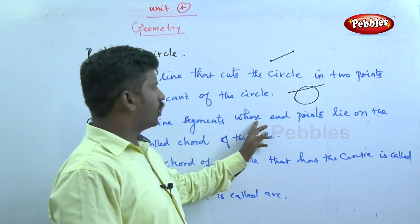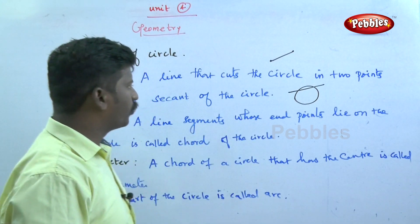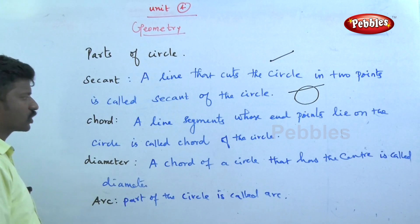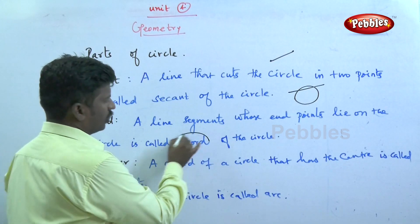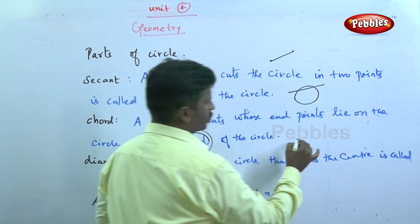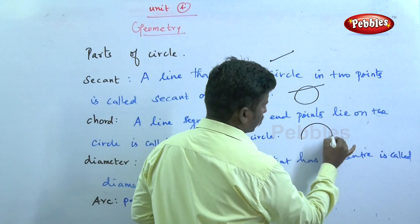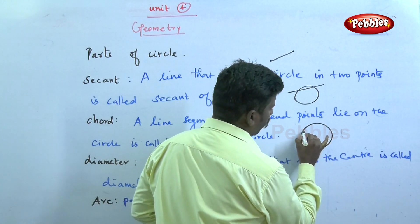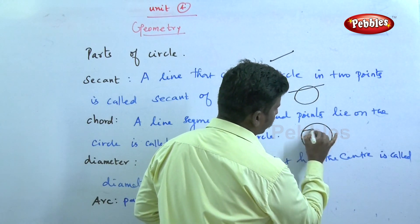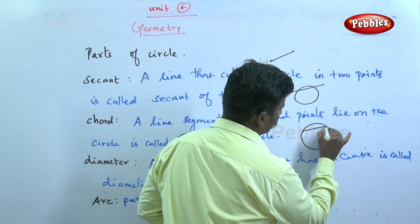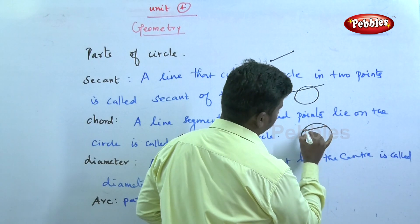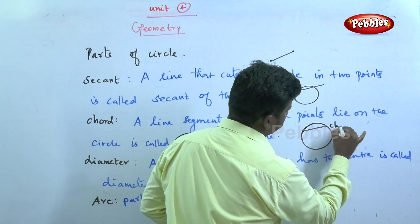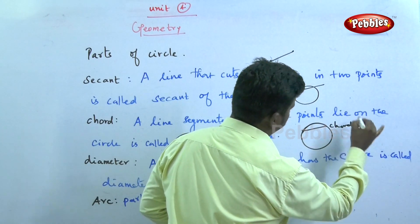The second one is chord — a line segment whose endpoints lie on the circle is called a chord of the circle. Take a circle; these are the endpoints on the circle. The endpoints lie on the circle — this is the chord.